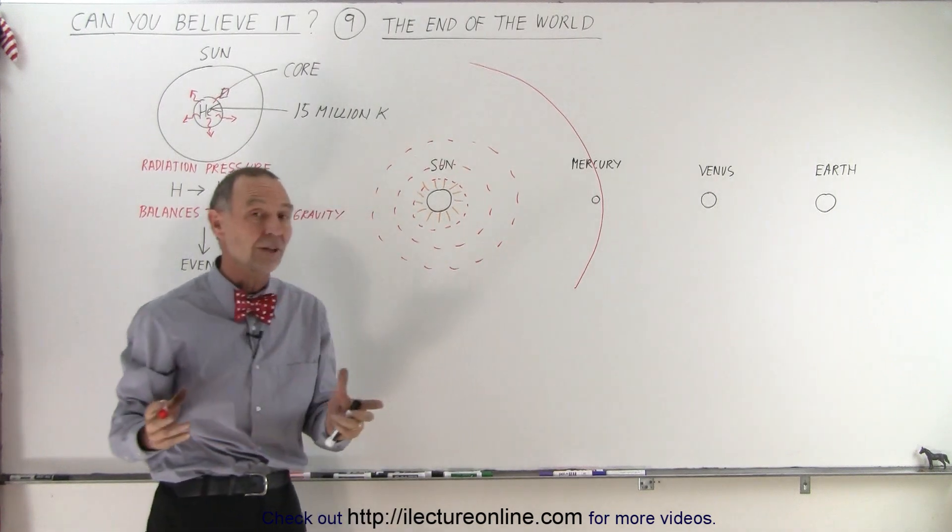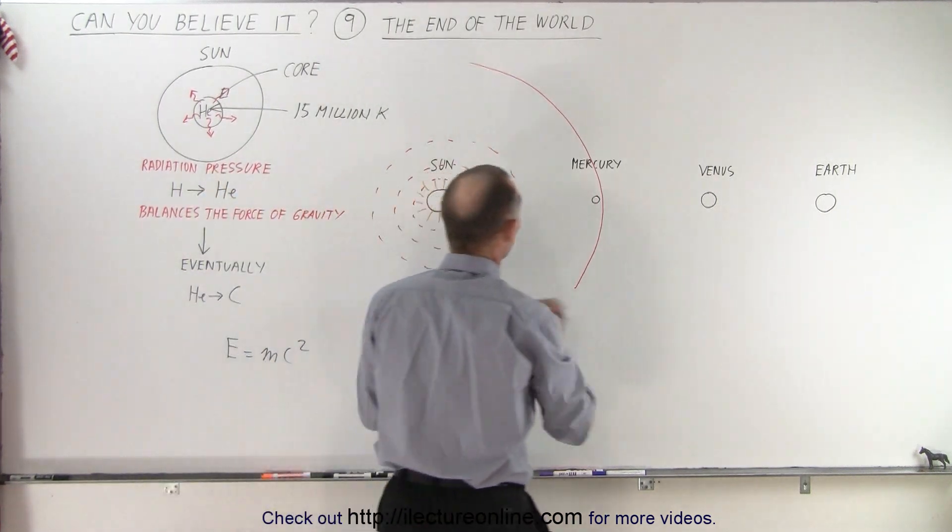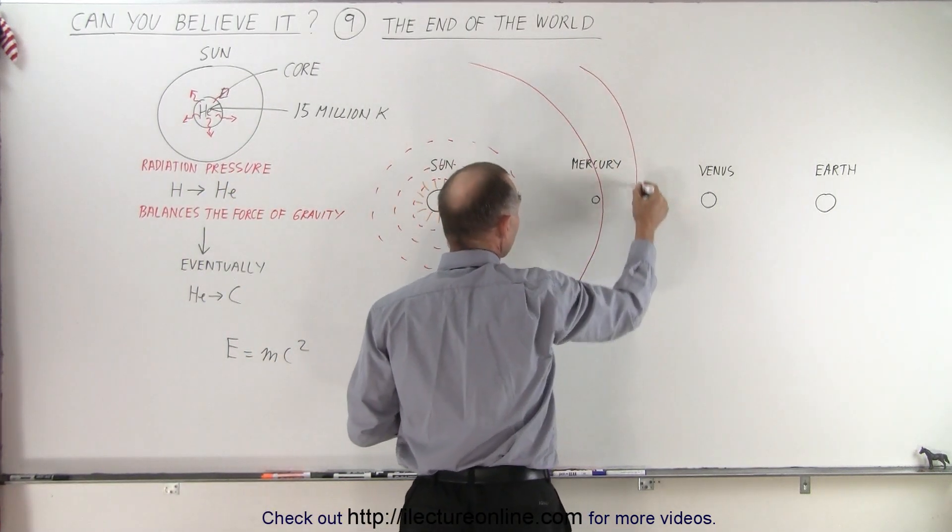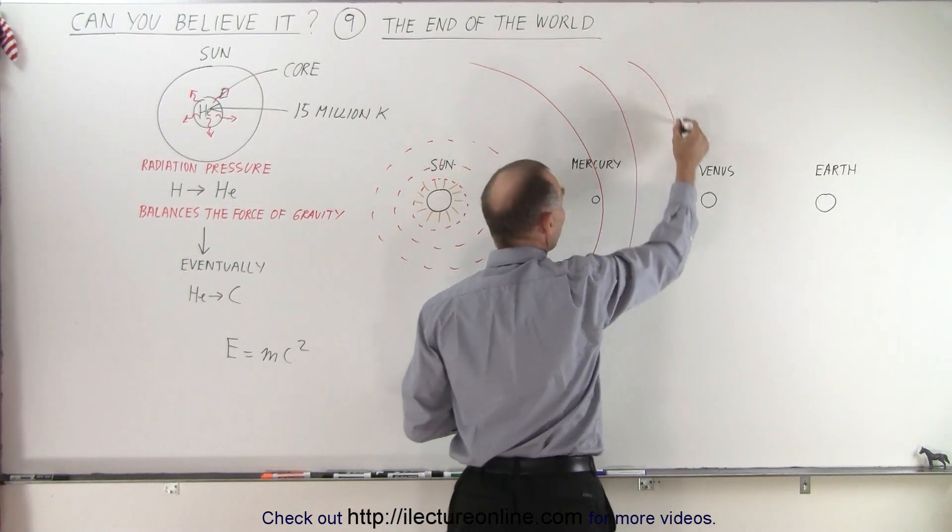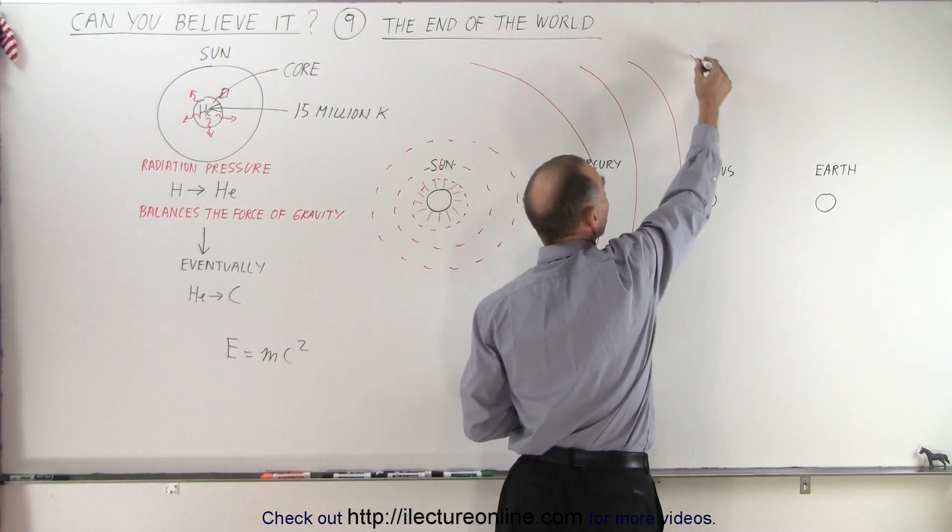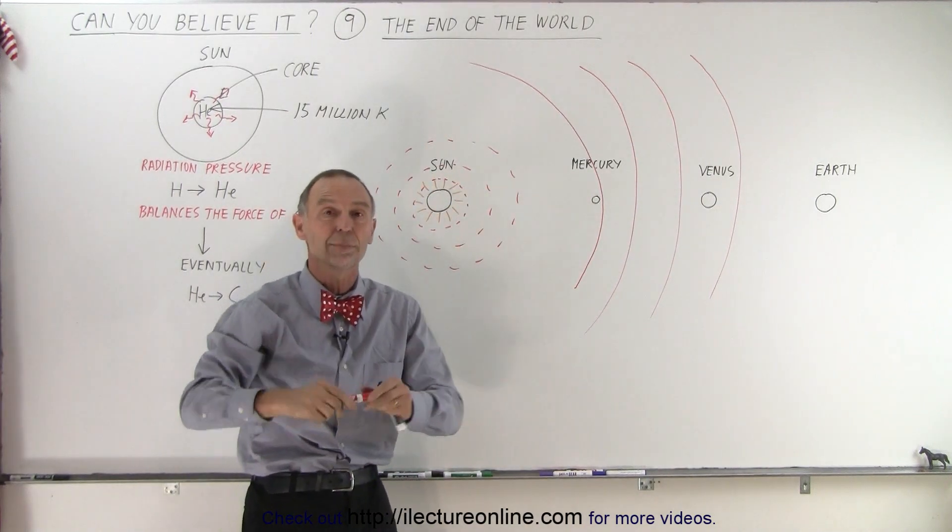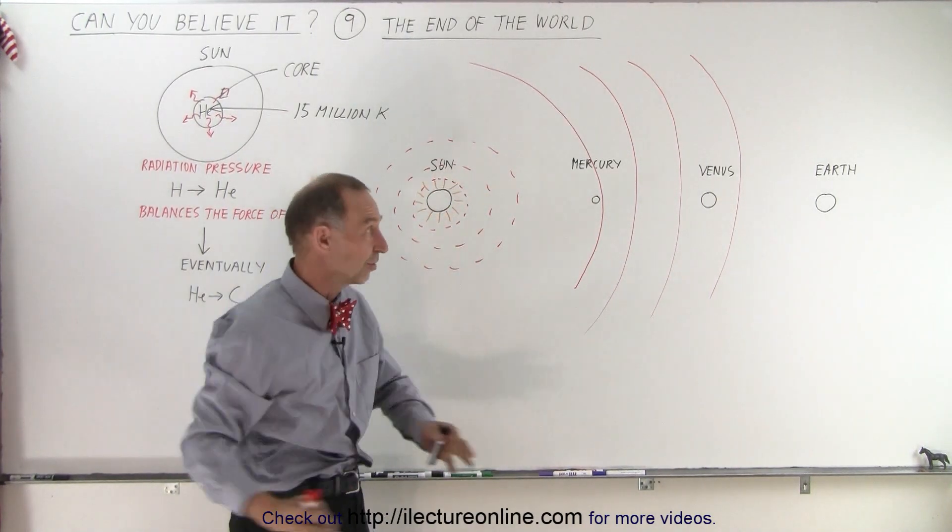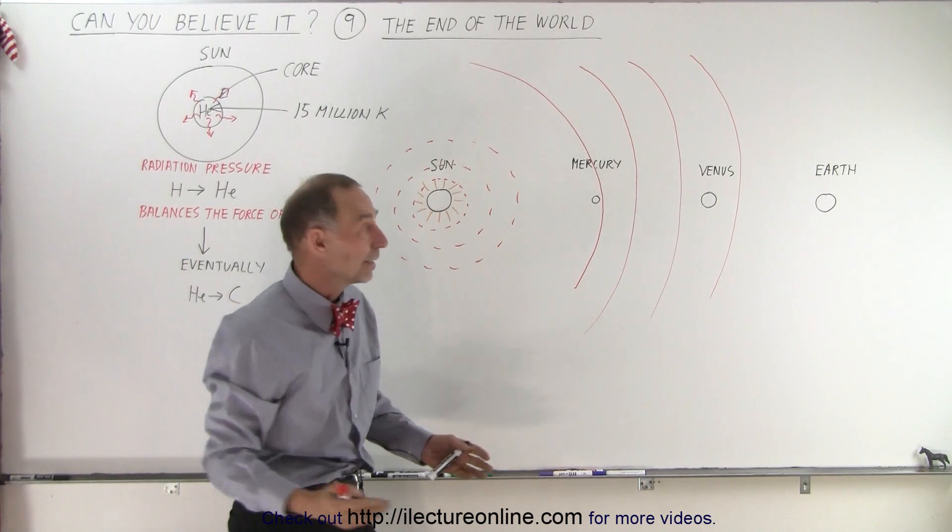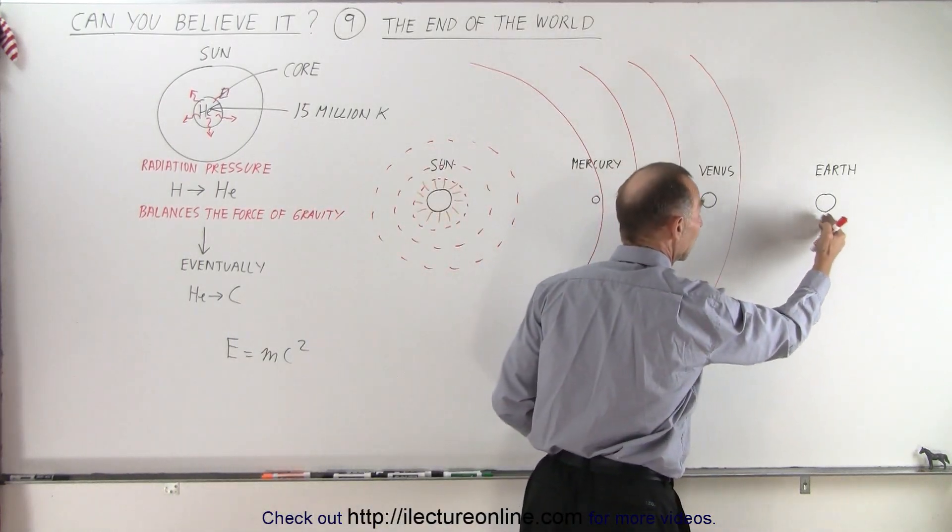But that's not where it stops. The sun will continue to grow bigger and bigger. And eventually it will expand to the point where Venus will get swallowed up by the sun. Well essentially Venus will become vaporized. It will simply disappear and now Earth will be the closest planet to the sun.